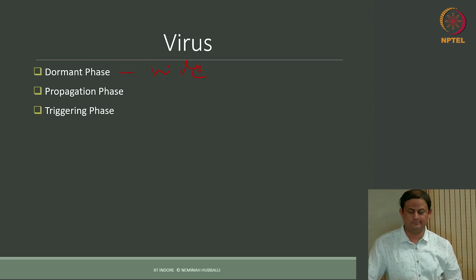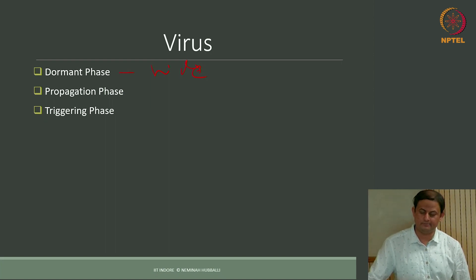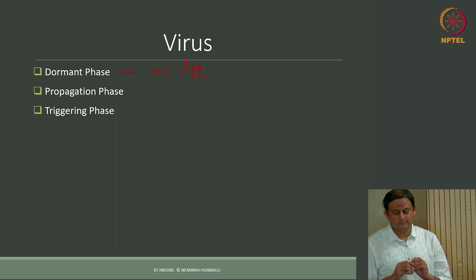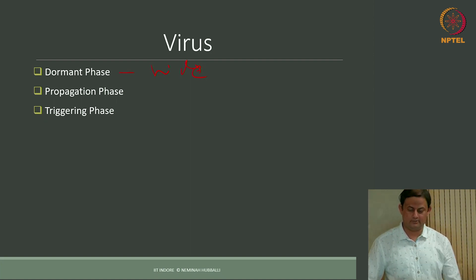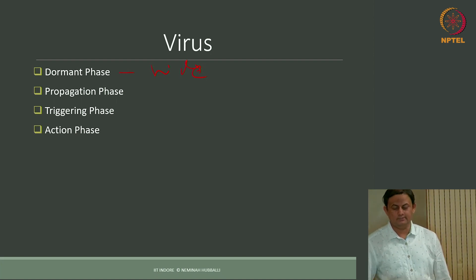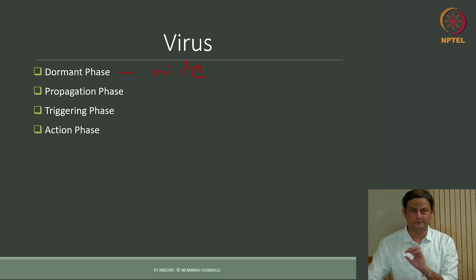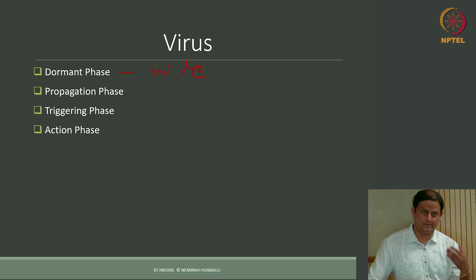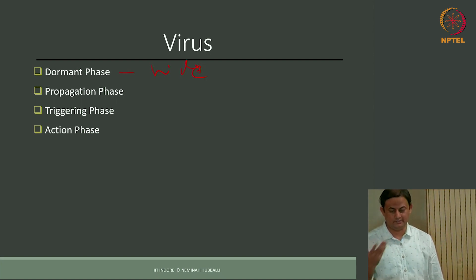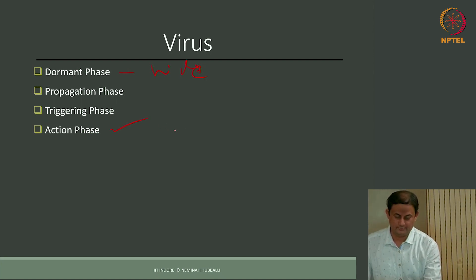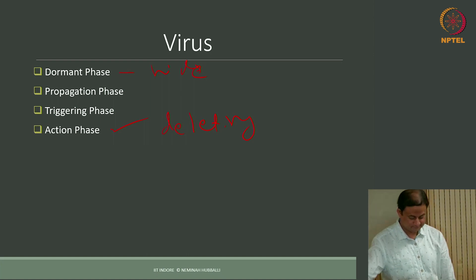The fourth phase is the action phase, which is the damage phase. The trigger phase is what starts the damage, and in the action phase the actual damage of the virus occurs — whatever the malicious logic specifies, such as deleting files, happens in this fourth phase. These are the four phases in which a virus propagates and executes itself.